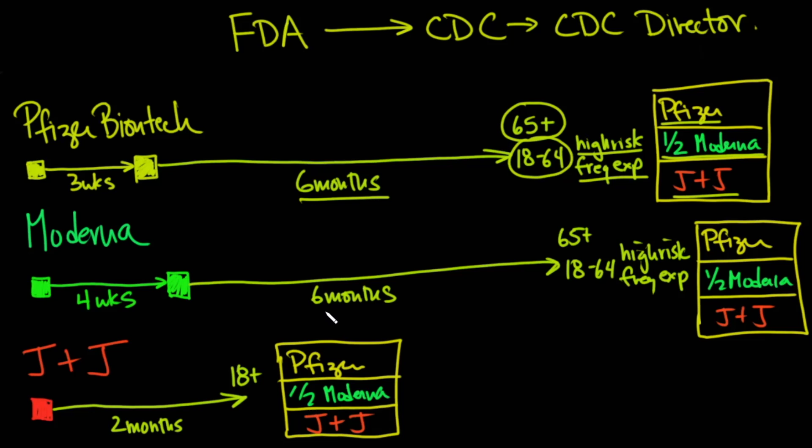If you had the Moderna and it's been six months since your last dose and you're 65 years of age or older, you can go ahead and get it. Or if you're 18 to 64 and high-risk or have frequent exposure, you can get the Pfizer-BioNTech, the half-dose Moderna, or the Johnson & Johnson booster.